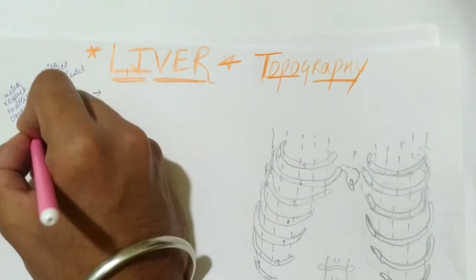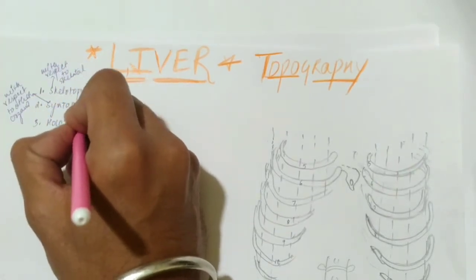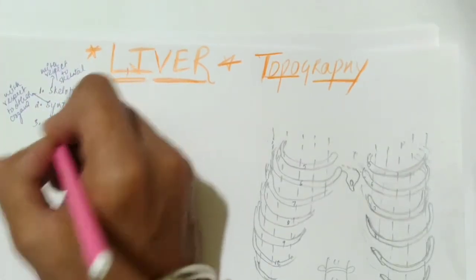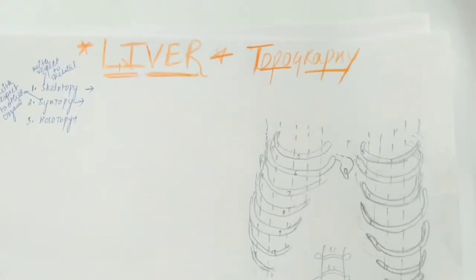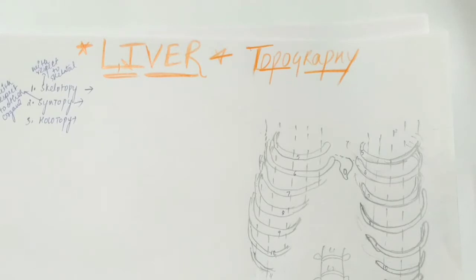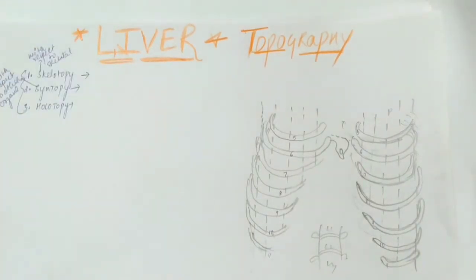The third one is holotopy. Holotopy is with respect to your abdominal regions. There are nine abdominal regions, and with respect to those regions, we identify in which region the organ is lying. By that specific region we name that topography as holotopy. These are the basic points for starting our topography.